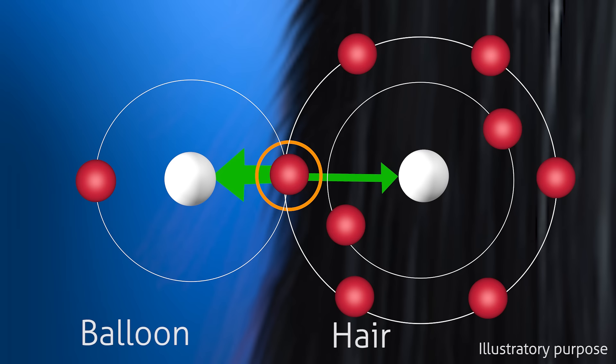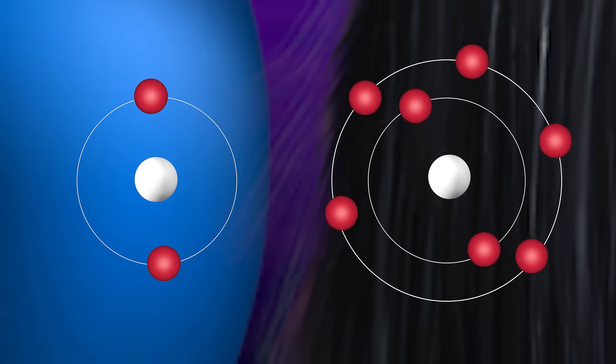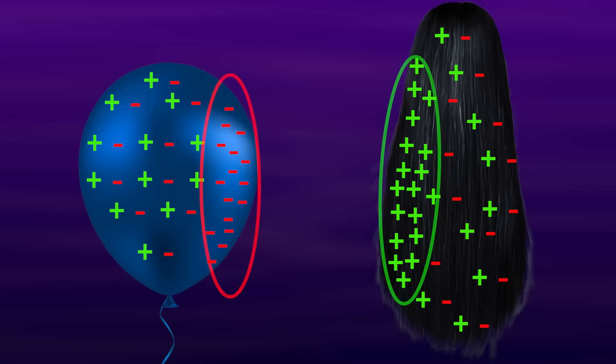And in the process of rubbing, the contact is lost now and many electrons of hair are trapped in the balloon. This gives an excess negative charge to the balloon and positive charge to the hair. And we say both have static charge now.